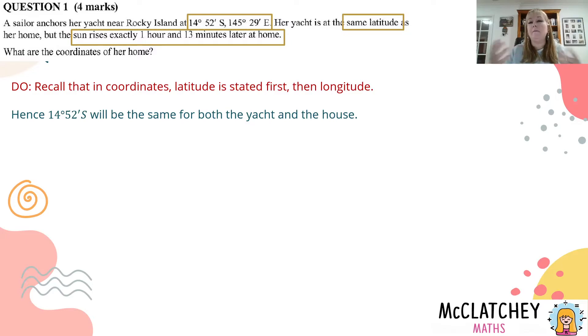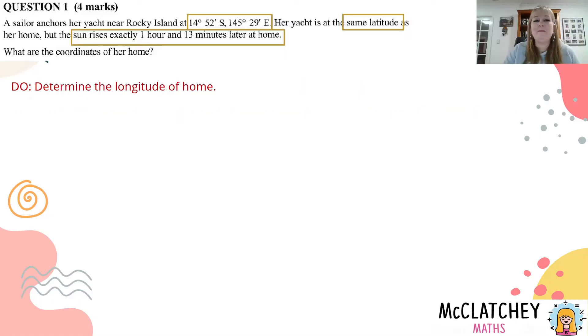So we know we're going to be doing something with 18 degrees to the 145 degrees. By actually identifying that latitude correctly, we got our second mark. We're halfway there now in terms of marks. So now we've got to work out the longitude of home.